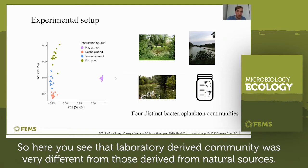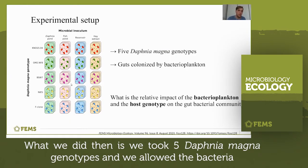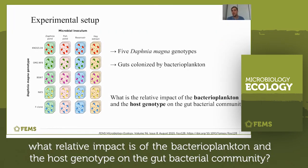Here you see that the laboratory-derived community was very different from those derived from the natural sources. We then took five Daphnia magna genotypes and allowed the bacteria from the bacterioplankton communities to colonize the guts of the Daphnia. We then asked what the relative impact of the bacterioplankton and the host genotype is on the gut bacterial community.